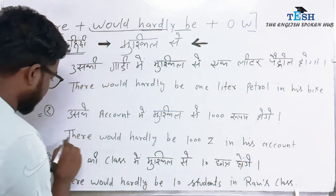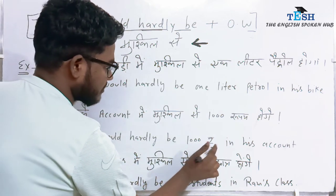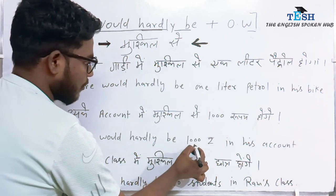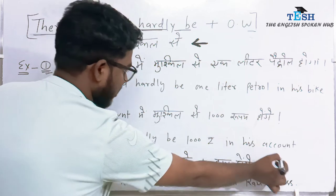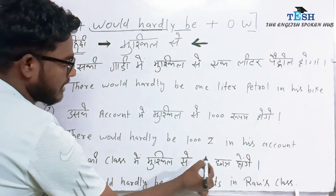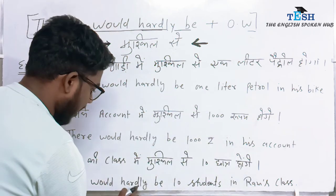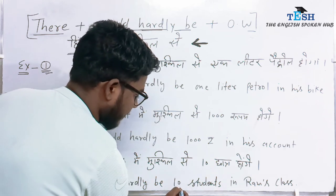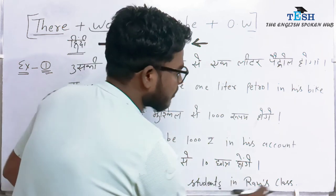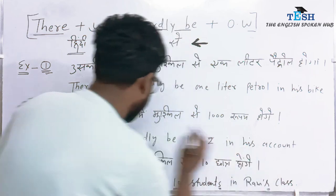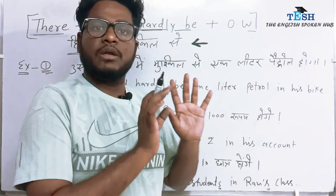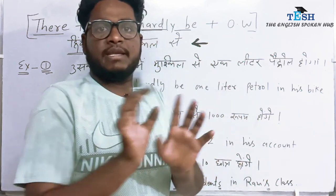'There would hardly be 1000 rupees in his account.' Third example: 'RAM ki class mein muskil se 10 students honge' — there would hardly be 10 students in RAM's class. Since there are 10, we use the plural. For RAM's class, the apostrophe-s is compulsory to show the possessive relationship — 'of' or 'ka/ki/ke' in Hindi.